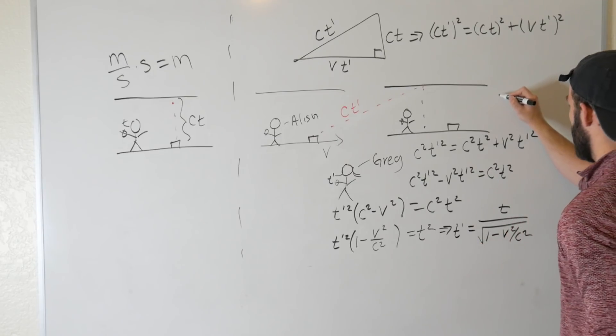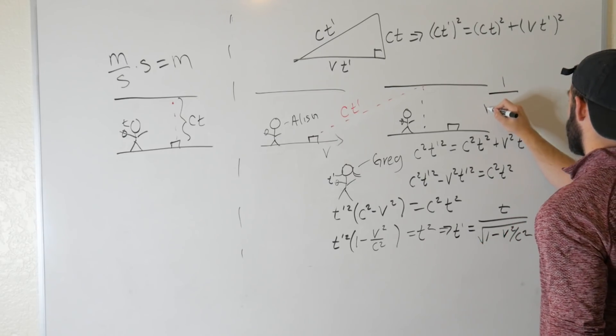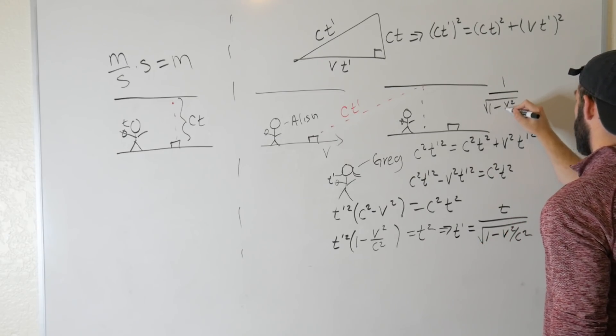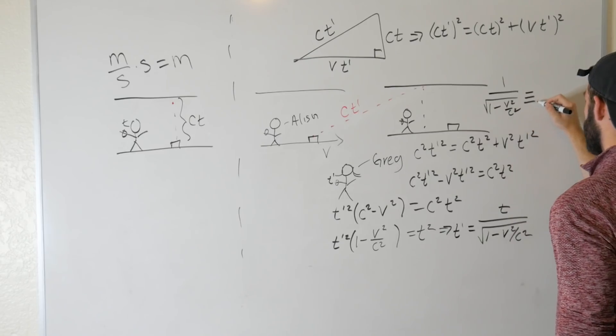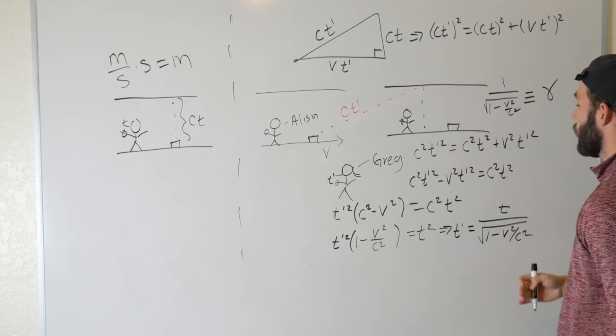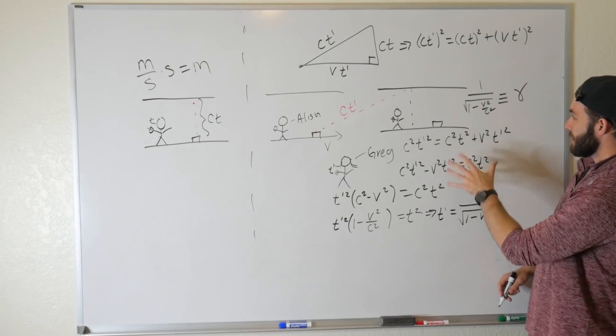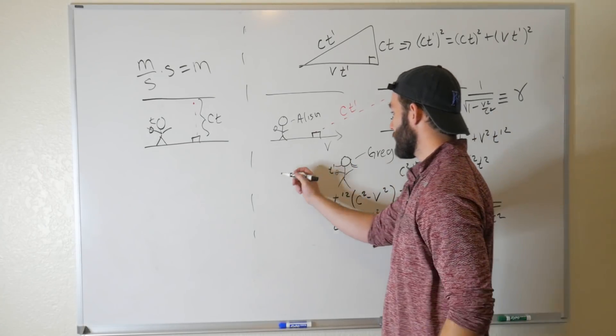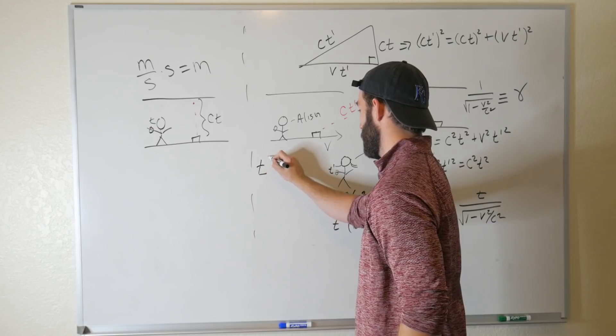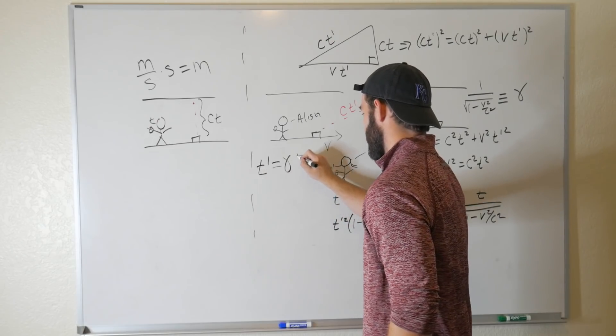And we have a special name for 1 over the square root of 1 minus V squared over C squared. That is defined to be this factor gamma, which is also known as the Lorentz factor. So at the end, this tells us that we can write T prime is equal to gamma times T.